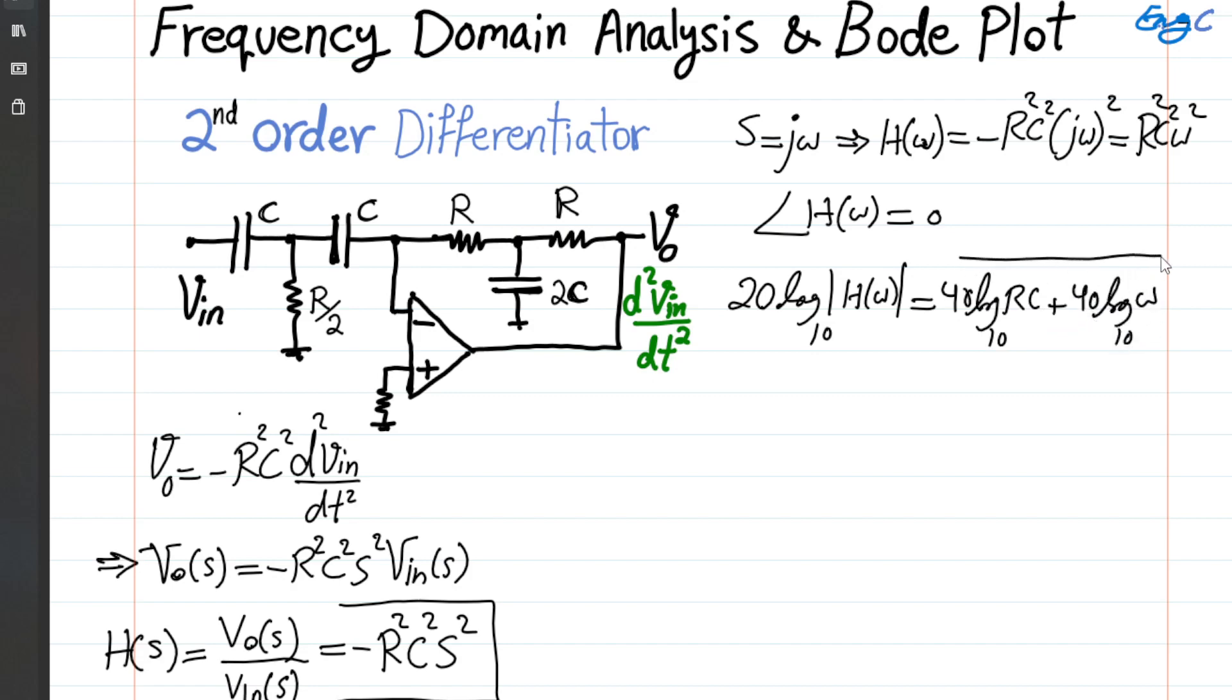And as you can see, it indicates that every time ω is increased by 10 times in terms of radian per second, or frequency, then there is a 40 dB increase.